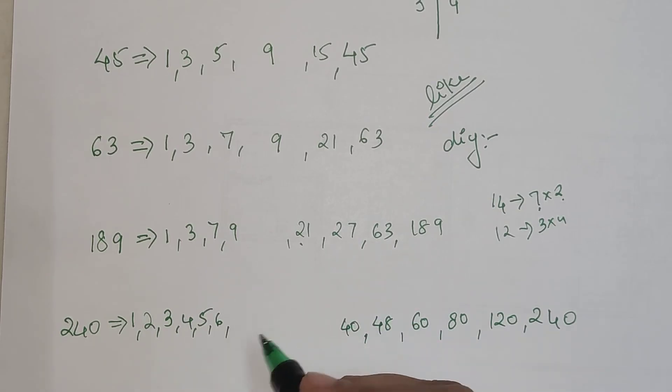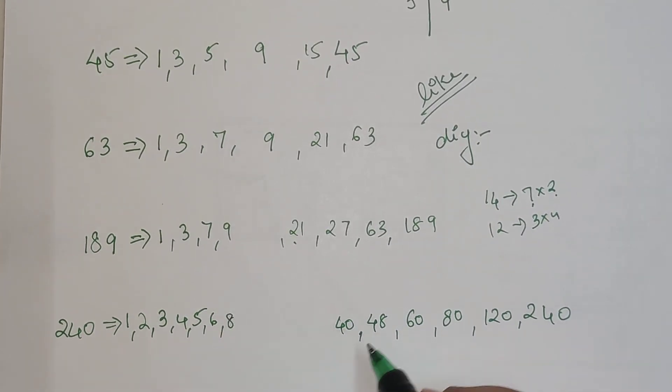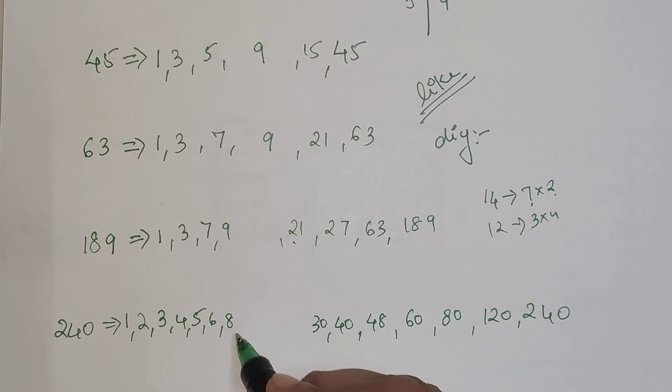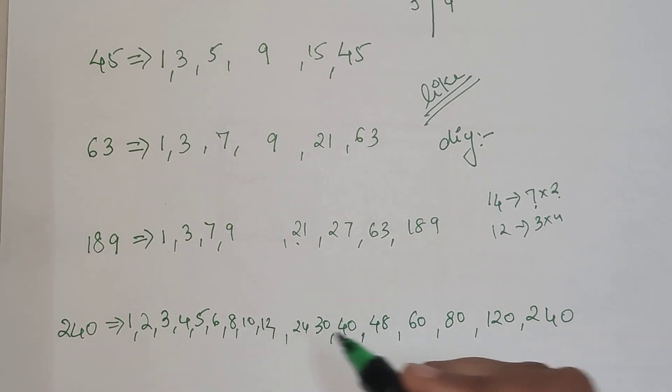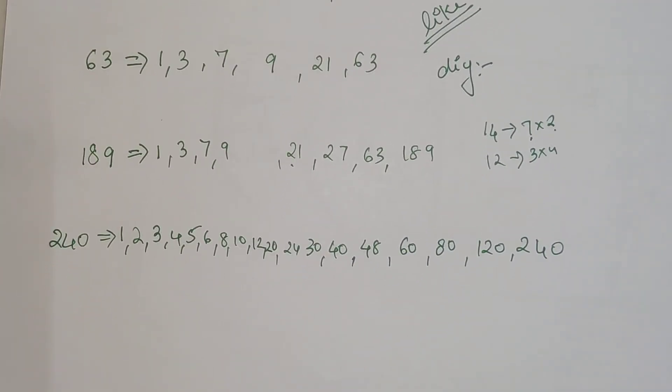7 doesn't work. 8 yes, 8 will get you 30. 9 doesn't work. 10 yes, 10 will get you 24. Then 11 will not work, and then we'll get 12 and 12 will get you 20.